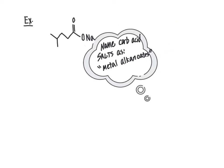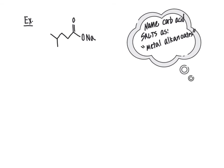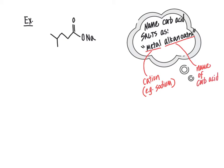We will name carboxylic acid salts as metal alcanoates. The "metal" part refers to the name of the cation — for example, sodium. The second part, "alcanoate," refers to the name of the carboxylic acid the molecule was derived from, with the "oic acid" ending removed and replaced with "oate." So, for example, hexanoic acid when deprotonated becomes hexanoate.